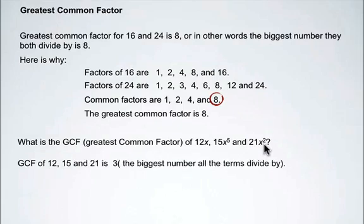The greatest common factor of 12, 15, and 21 is 3.